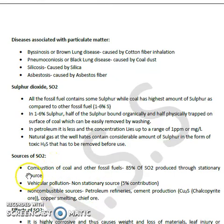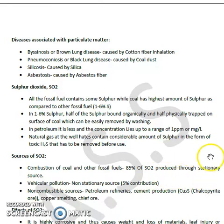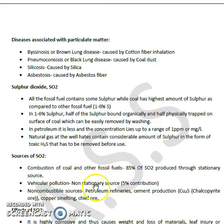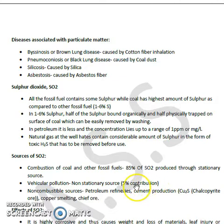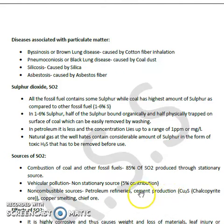Regarding combustion of coal and other fossil fuels: 85% of SO2 is produced by stationary sources. Vehicular traffic, a non-stationary source, contributes 5%. Non-combustion sources include petroleum refinery, ore processing, cement production, and copper smelting.